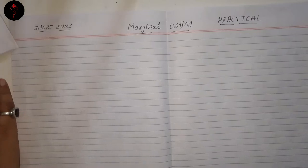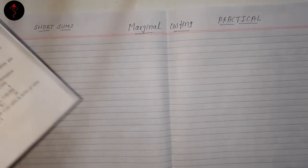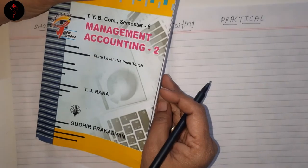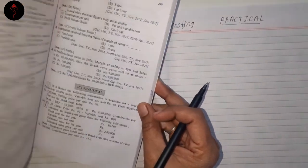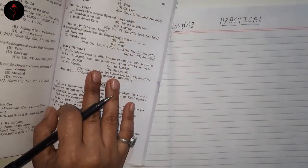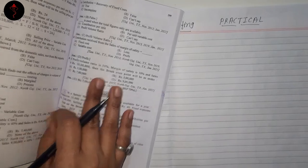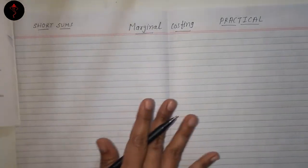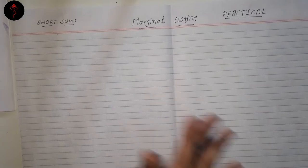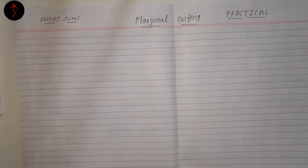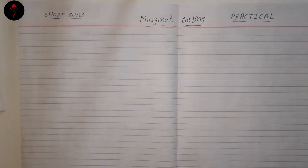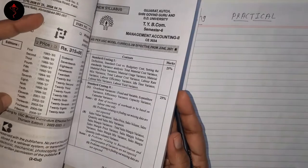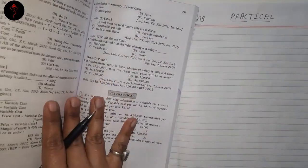Good morning students. Tiva Ibukom, semester 6, management accounting 2. Today we are doing some short sums of marginal costing. I already took one lecture and one video is already there, which I have explained the marginal costing formula. Now we will do some short sums. This is the year 22 and 23rd edition, new syllabus.